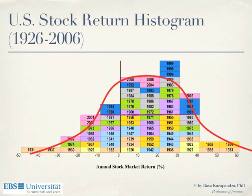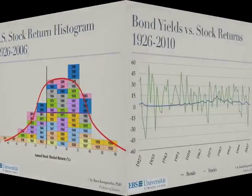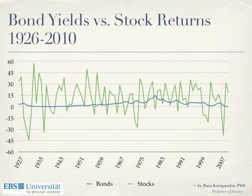The same data plotted differently shows the green line — market returns — moving much more up and down than the blue line, which represents bonds. Bonds basically almost don't move compared to stocks. So stocks are riskier than bonds because they give us more ups and downs. We don't enjoy ups and downs — we prefer staying in the middle of our utility function. We prefer one thing in the middle compared to one up and one down, because our utility function is concave.